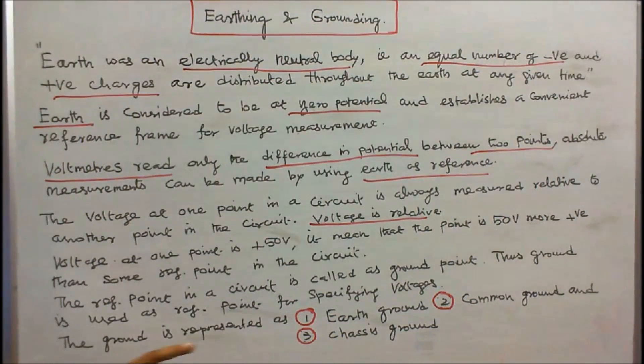The ground is represented as Number 1: Earth Ground, Number 2: Common Ground, Number 3: Chassis Ground.